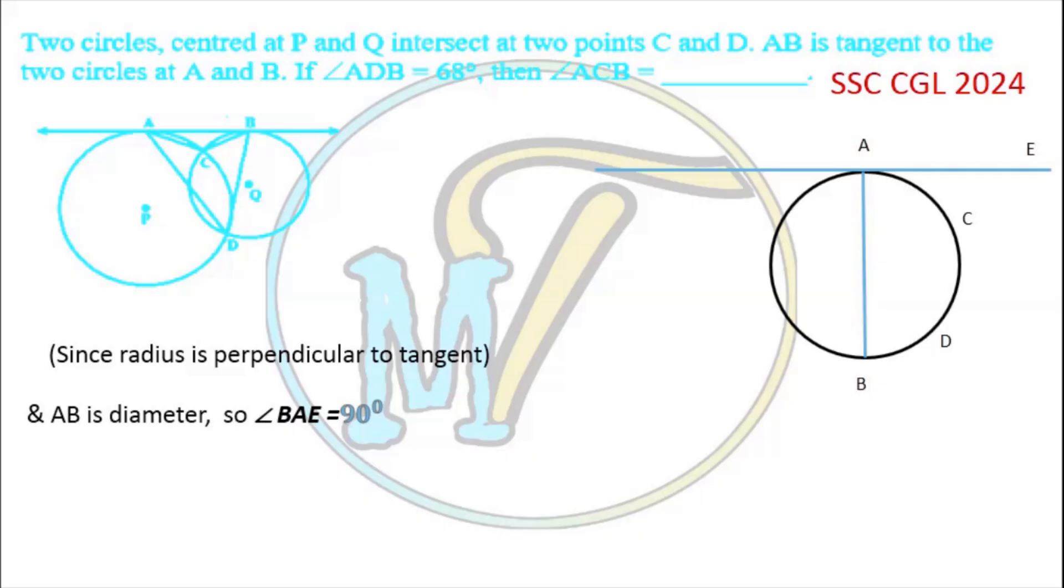So angle BAE equals 90 degrees. As from the figure, angle BAE can be written as angle BAC plus angle CAE which equals 90 degrees.